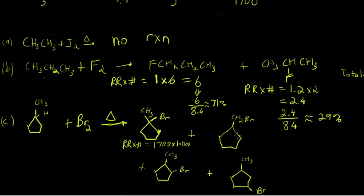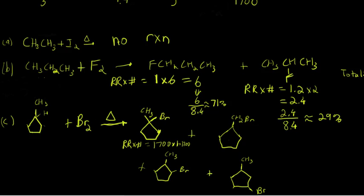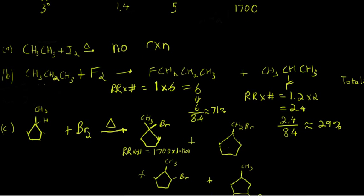So for this one, this is a primary hydrogen. If we look at bromination, remember all these are normalized to primary hydrogen, so that's 1, a relative reactivity of 1. And we have 3 possible primary hydrogens that could be substituted here. So relative reactivity times number is 1 times 3, and that's 3.